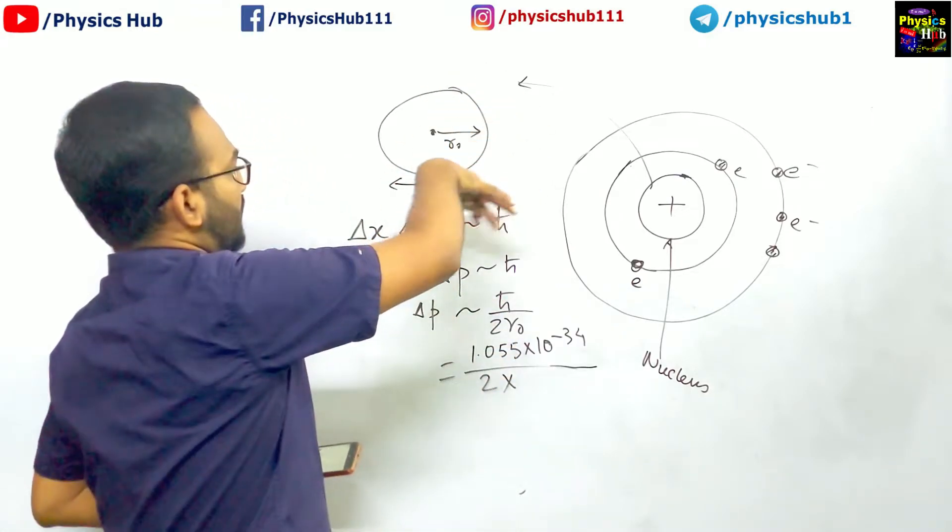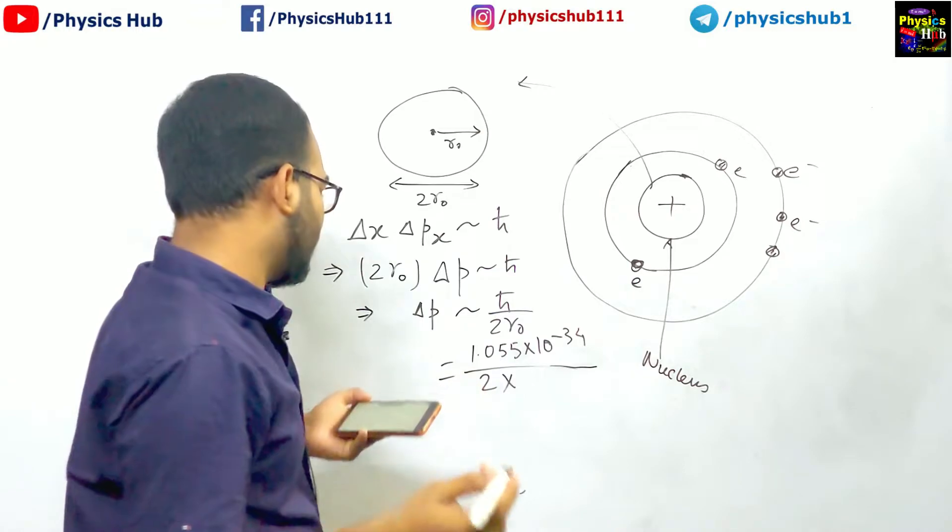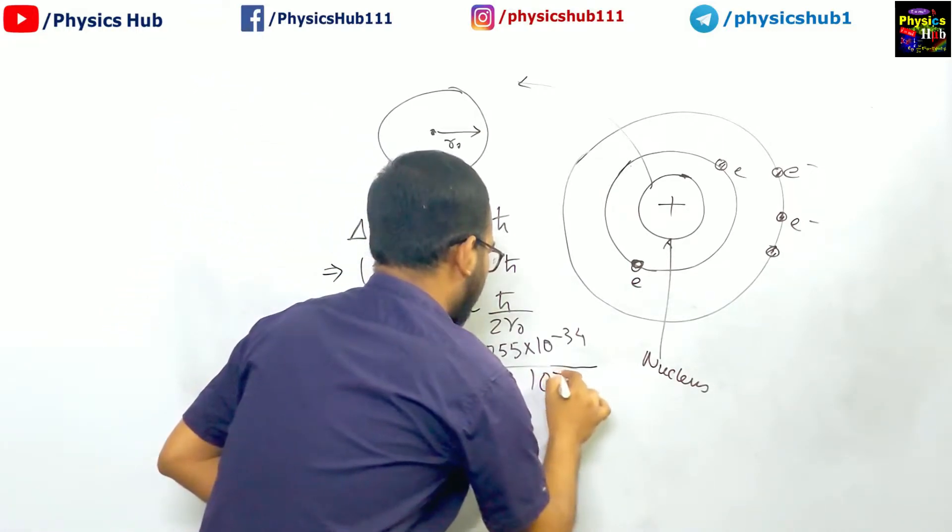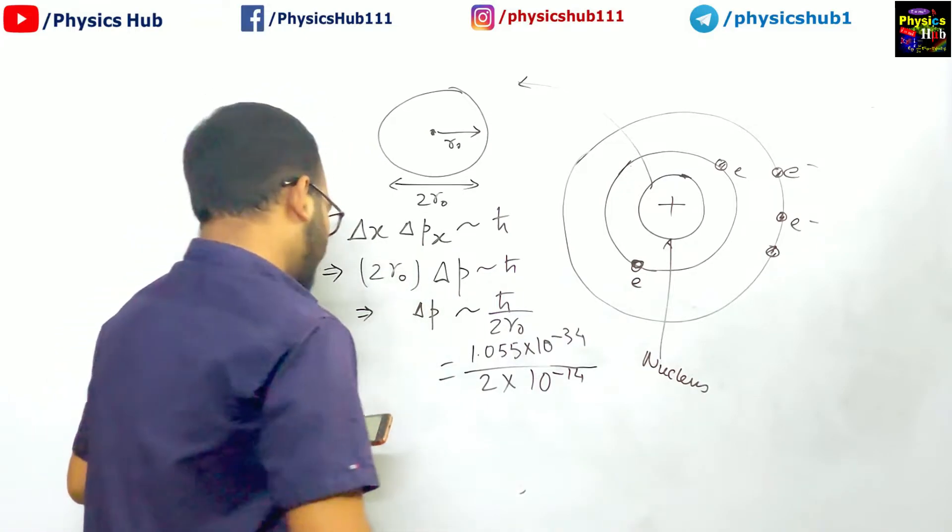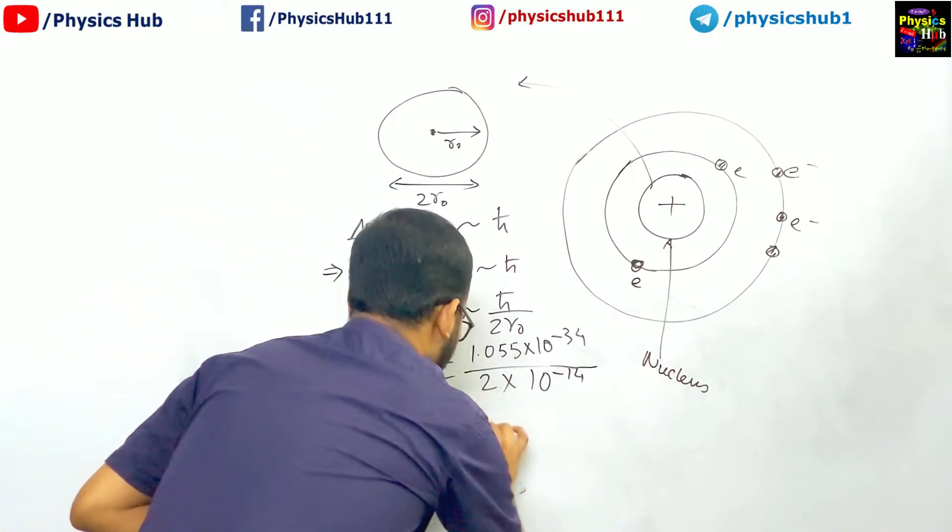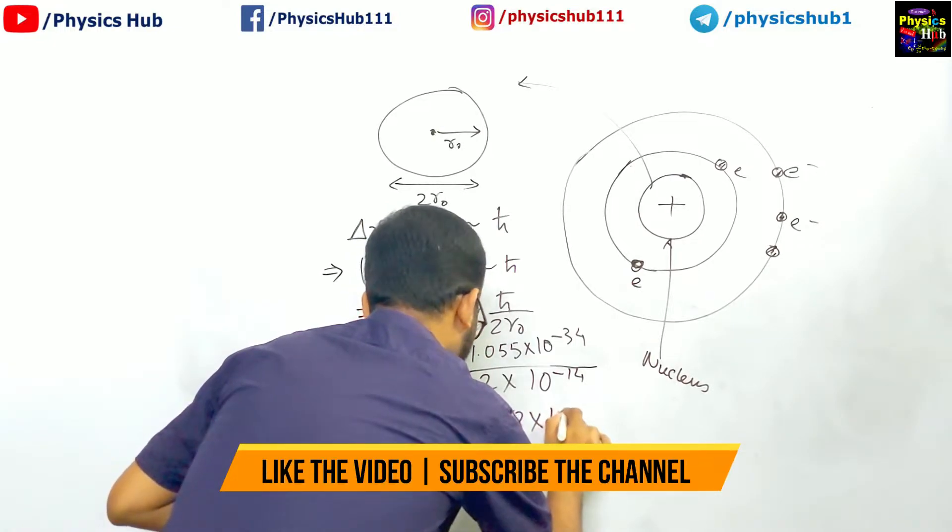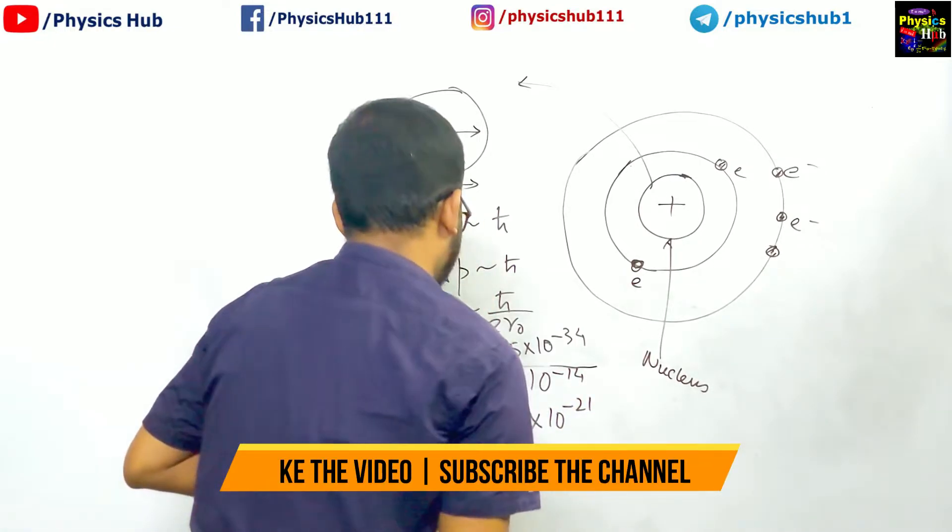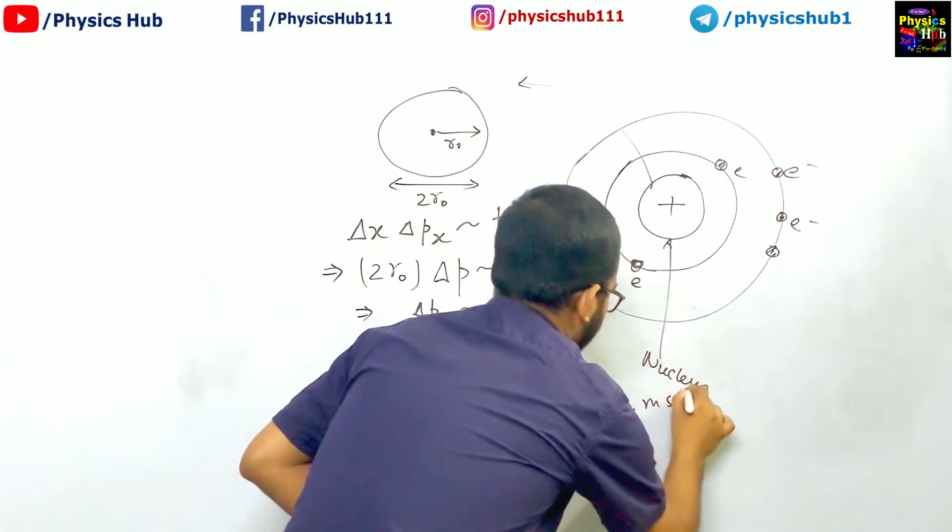Two times r0, where r0 is the radius of this nucleus, is of the order of 10 to the power minus 14. So if you calculate, you will get a value like approximately 5.28 into 10 to the power minus 21, and its unit is kg meter per second.